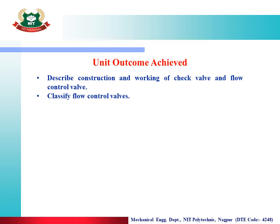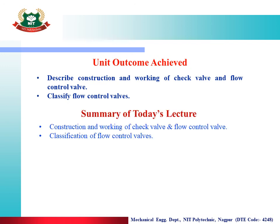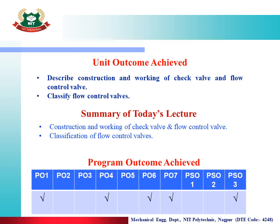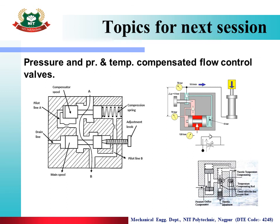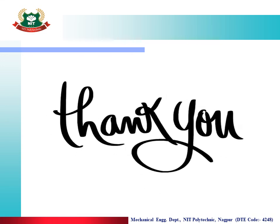Summary of today's lecture: Construction and Working of Check Valve and Flow Control Valve, and Classification of Flow Control Valves. Program Outcomes achieved: PO1, PO4, PO6, PO7, and PO3. Next session we will study pressure compensated, temperature compensated, and pressure-and-temperature compensated flow control valves. Thank you, happy learning, stay online.